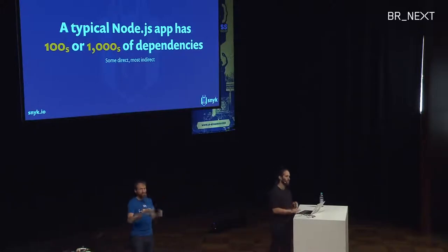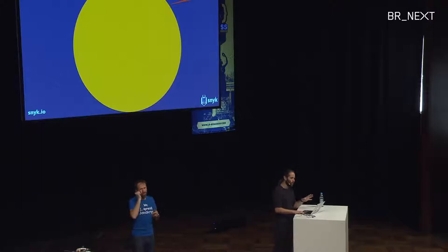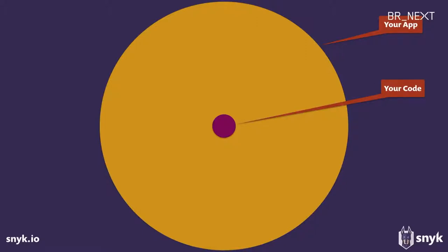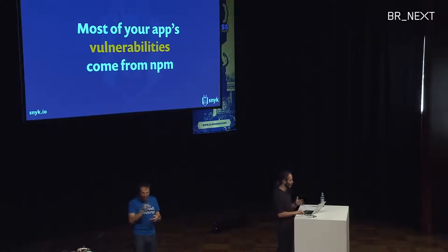One study put it at 350 on average. It leads to a situation where this is your app and this is your code — a very small piece of the whole. You could create all that value by just writing that little dot of code, which is a good thing, but also a risky one from a security perspective. When you think about security, most of your app's code comes from npm, which also means most of your app's vulnerabilities come from npm or these packages.